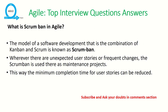The next question is: what is scrumban in agile? Scrumban is a software development model that is a combination of Kanban and Scrum. It is used wherever there are unexpected user stories or frequent changes, to maintain the project. This way, the minimum completion time for user stories can be reduced.